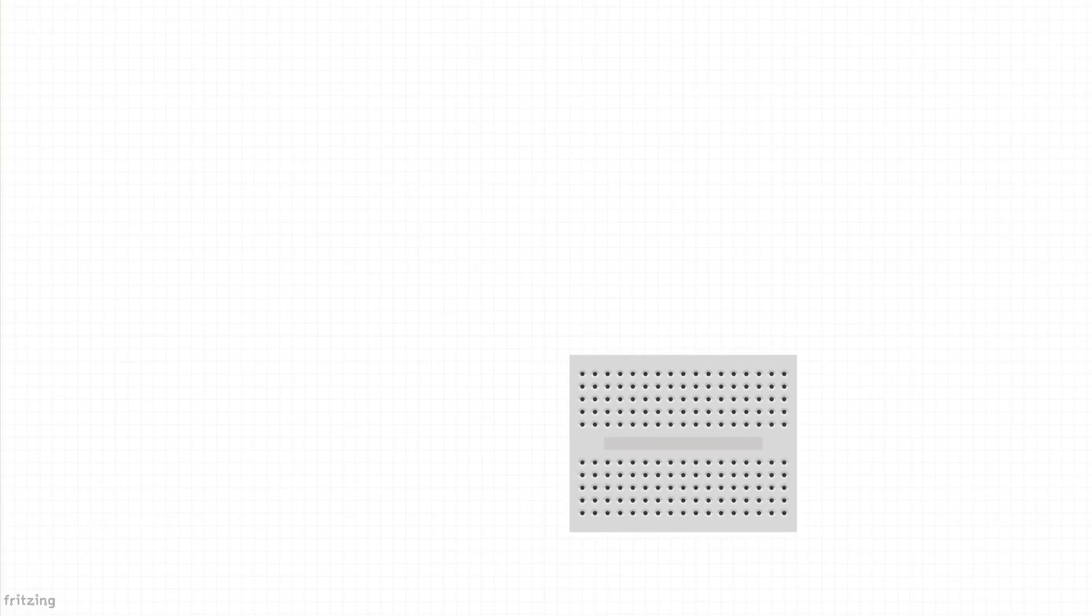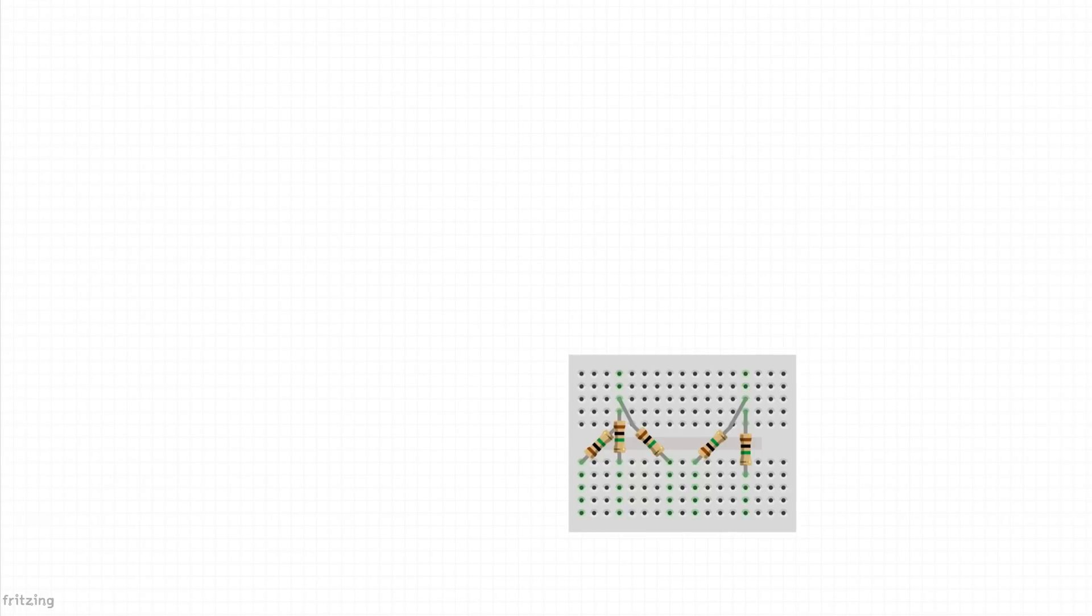Now let's make it. Place three resistors so one leg has its own row and the other leg shares a row with two other resistors. Do the same for three more resistors.